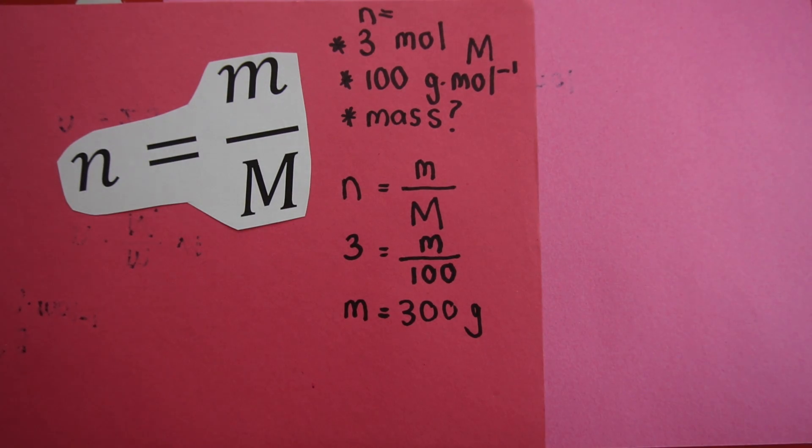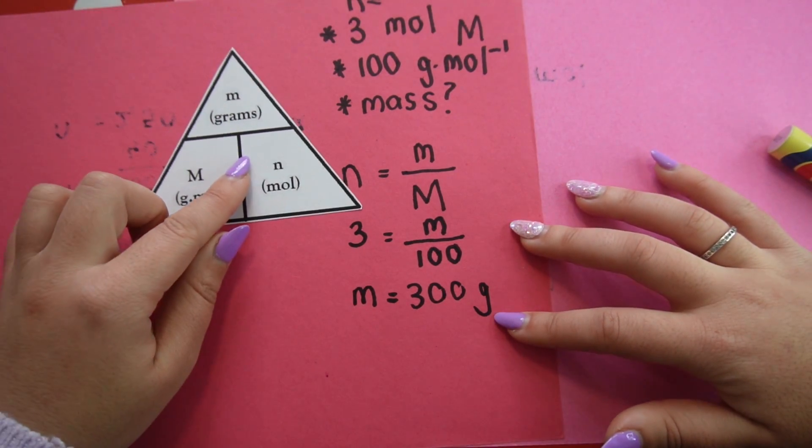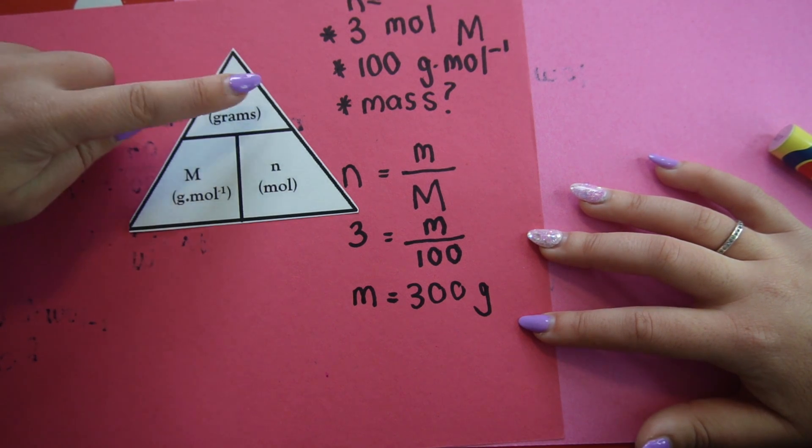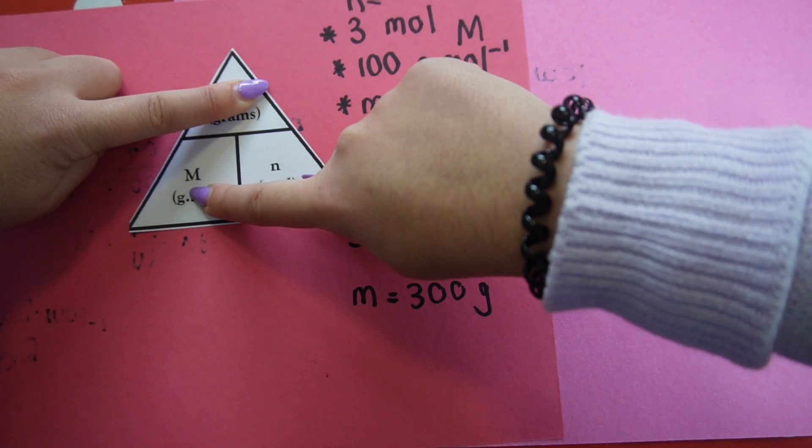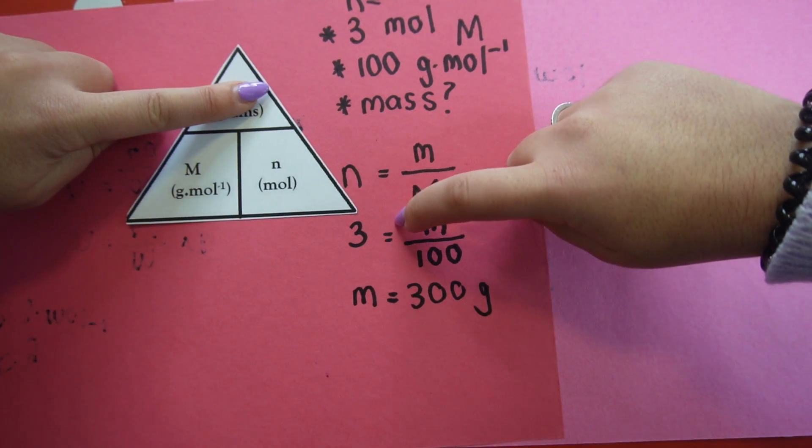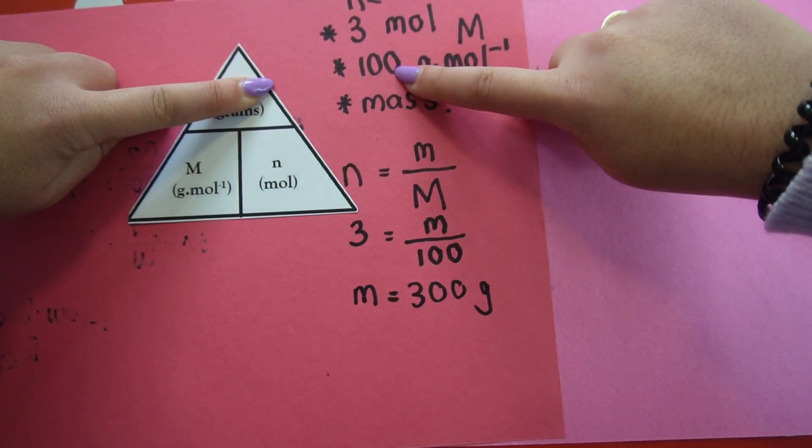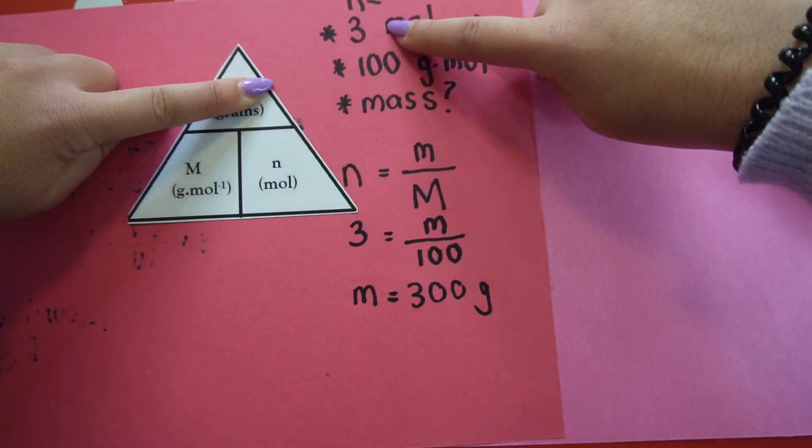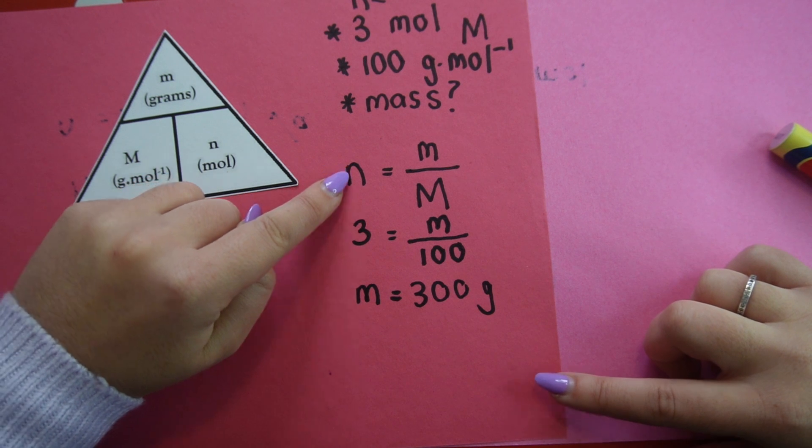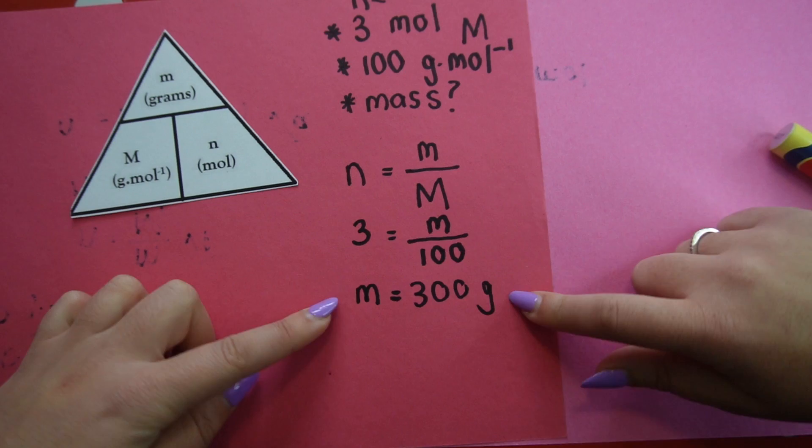Another way that you could have done this is you could have looked at your triangle and you could have said, well, I need mass. Mass is in grams. That's what I'm looking for. In order to calculate mass, I need to take my molar mass multiplied by my N. Remember, I'm covering what I'm looking for, and it's these two things multiplied by one another. So molar mass, 100, multiplied by number of moles, three. And there we go. But remember, it's very important. You need to write your formula. You need to show substitution. You need to write your answer with a unit.